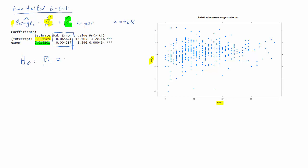zero. That would mean that years of experience have no impact on the log wage. The alternative would be that beta 1 is unequal to zero, meaning there is some relationship between years of experience and the log wage.